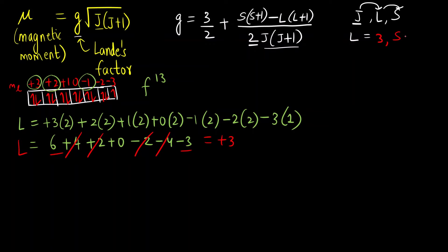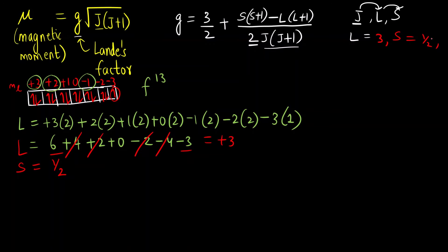Now we calculate S, the total spin. For f¹³ there is only one unpaired electron, so the total spin S = 1/2.